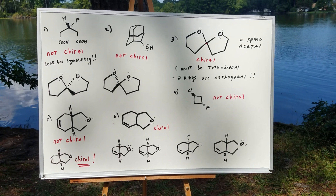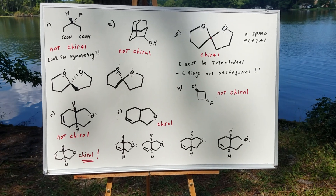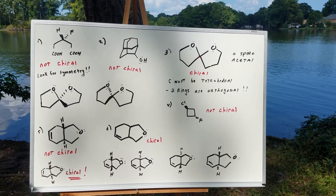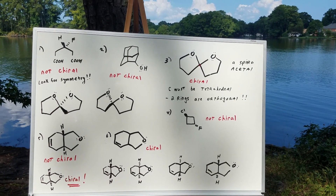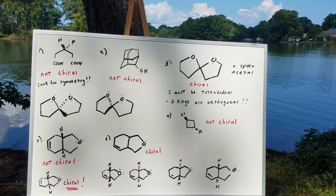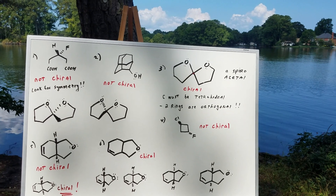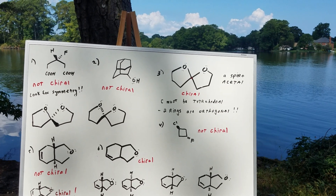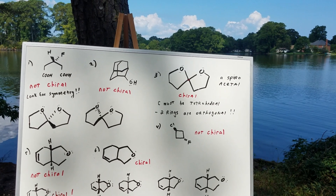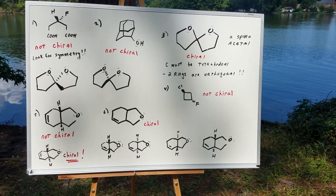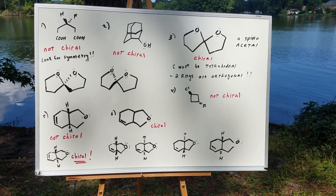In the first problem, I want to know: is this molecule chiral or not chiral? A chiral molecule is going to have an enantiomer and as such it will be able to rotate the plane of polarized light.